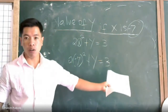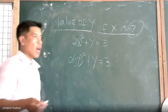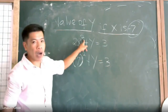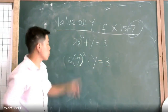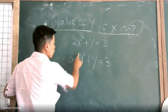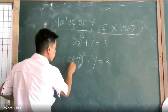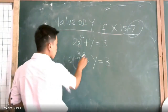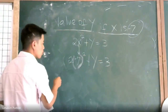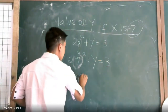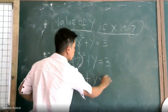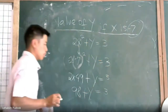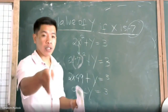Apply PEMDAS — don't forget PEMDAS. 2 times x raised to the power of 2, where x is negative 7: negative 7 raised to the power of 2 equals 49. So 2 times 49, bring down plus y, is equal to 3. That gives us 98 plus y is equal to 3.